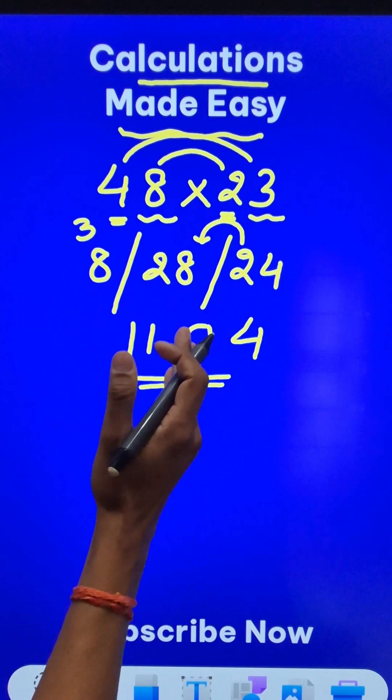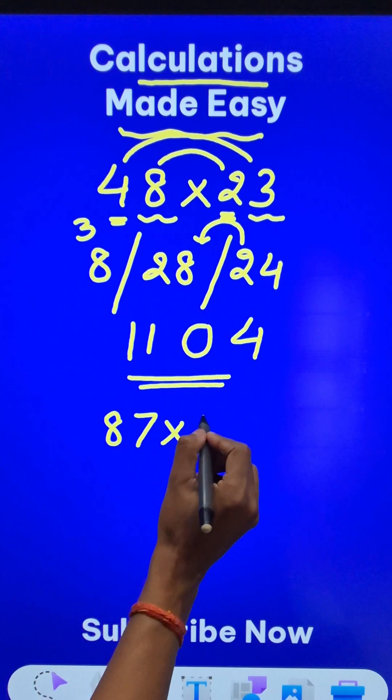Try this, this is not at all difficult. Let's do 87 times 56 using this approach.